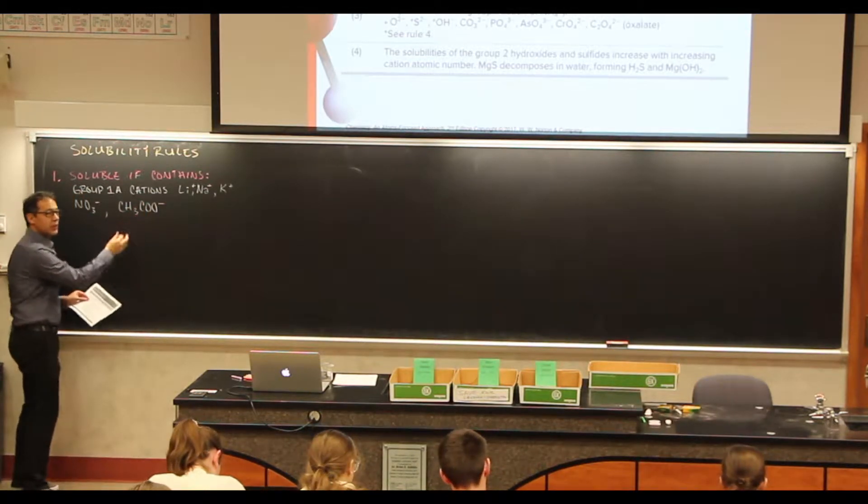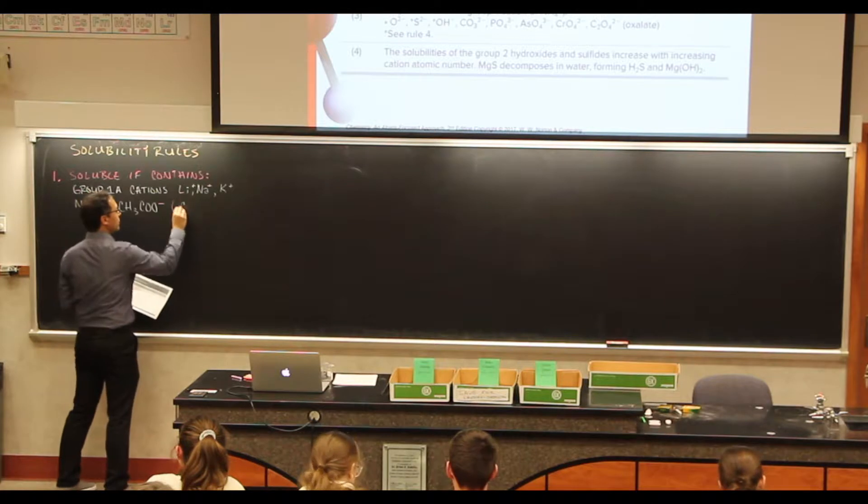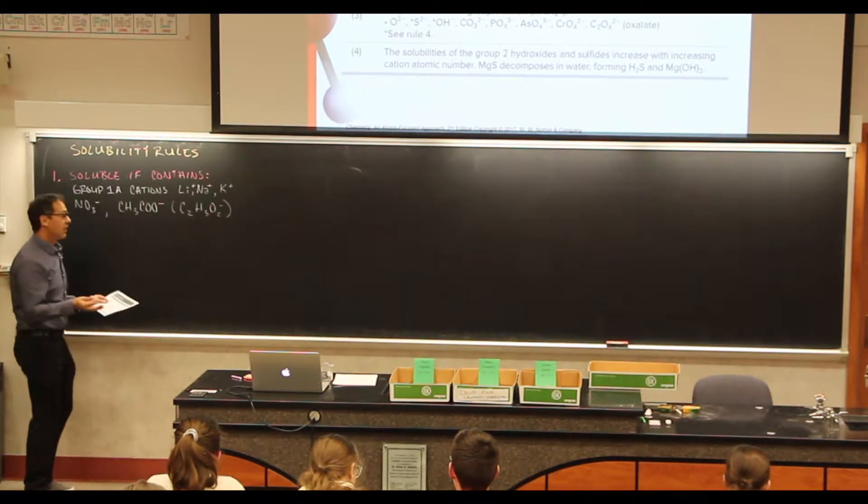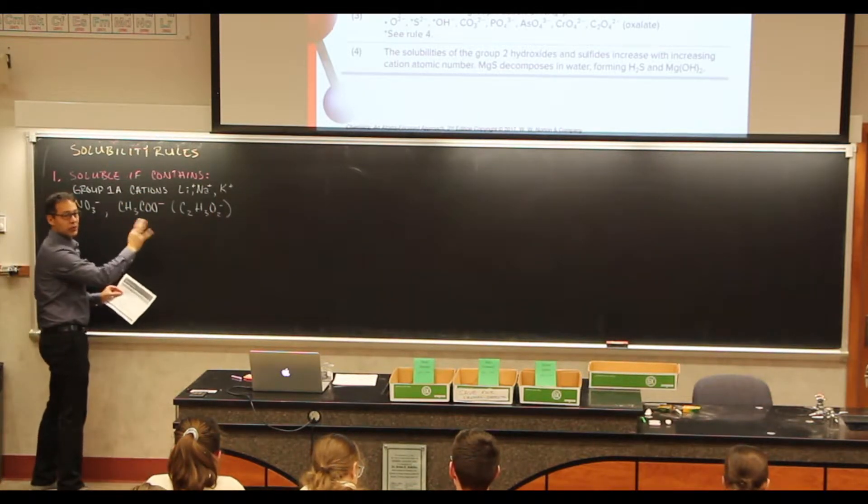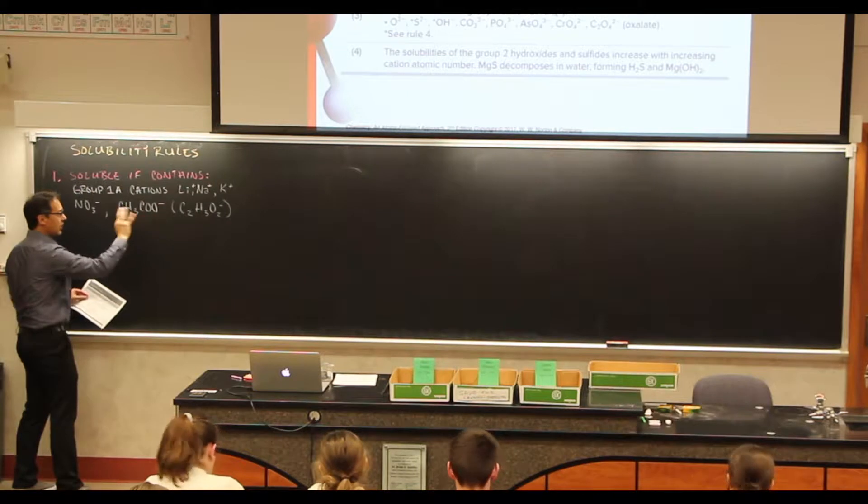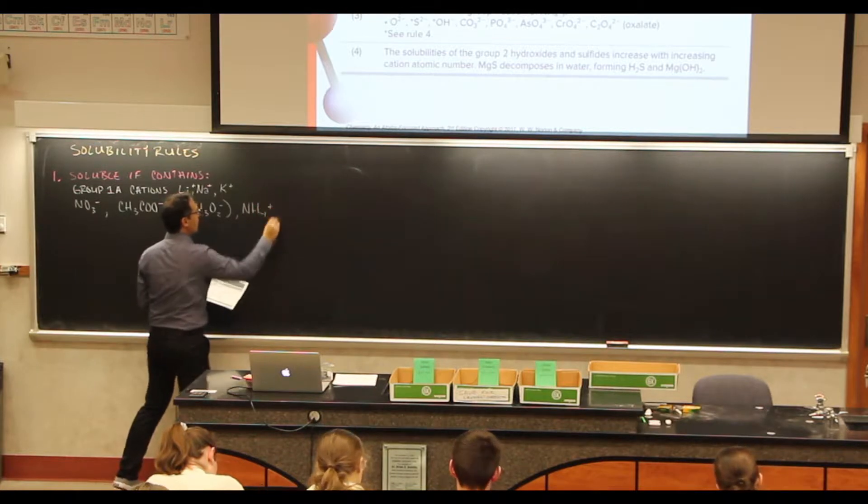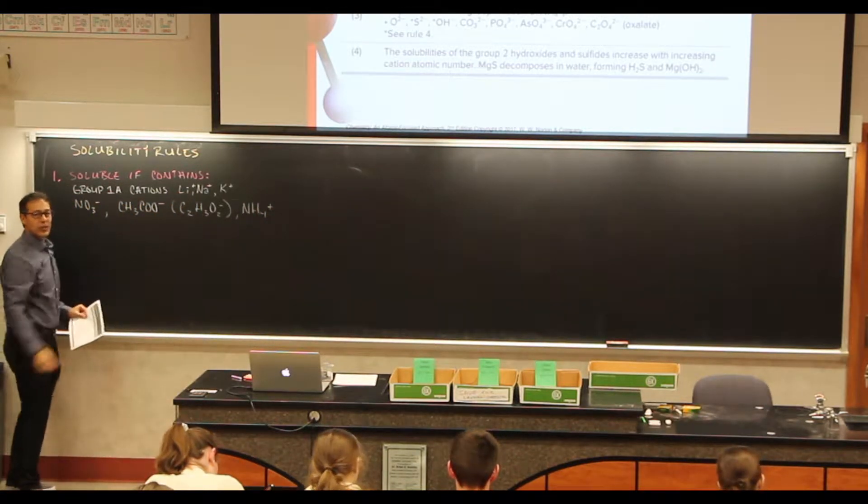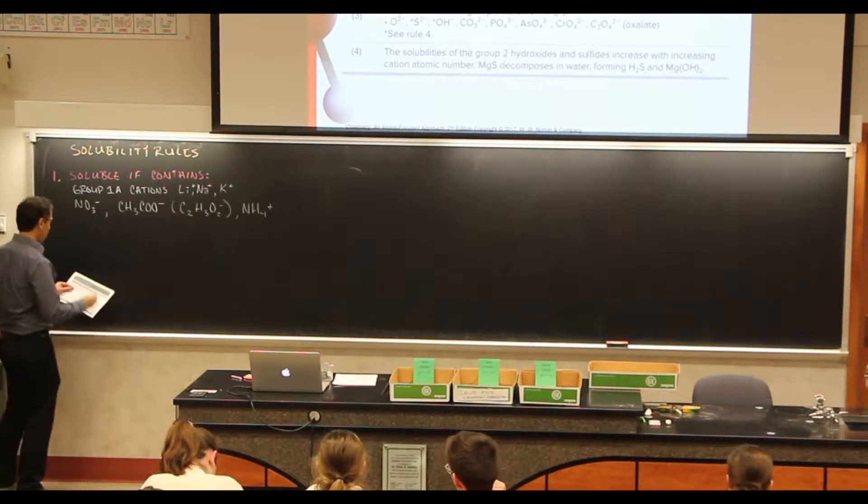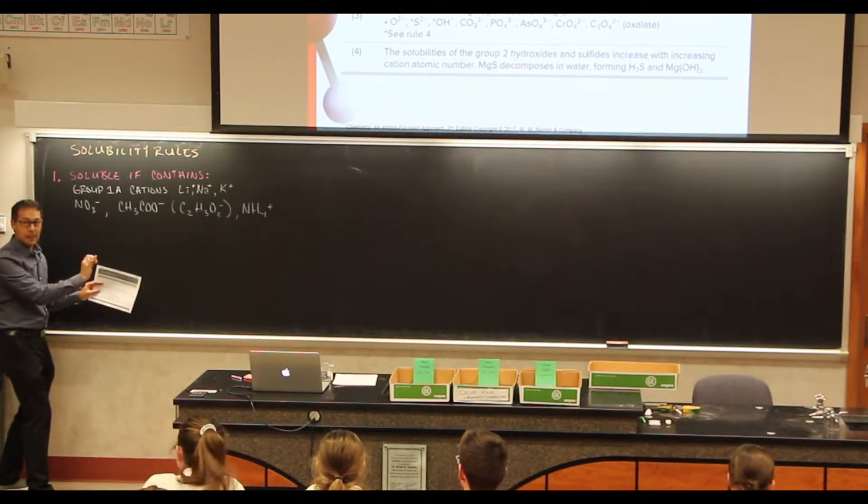Acetate, it is soluble. Now acetate is written this way. Sometimes it's written a little bit differently. Sometimes it's written like this, where we have C2H3O2 minus. It's the same thing, just written a little bit differently. This is acetate. And if we have this in a compound, it is soluble. And the other thing is ammonium, NH4+. So any of these things, if we see these in a compound, it's going to be soluble in water. Any questions on that? Rule number one. We see these things, think soluble.